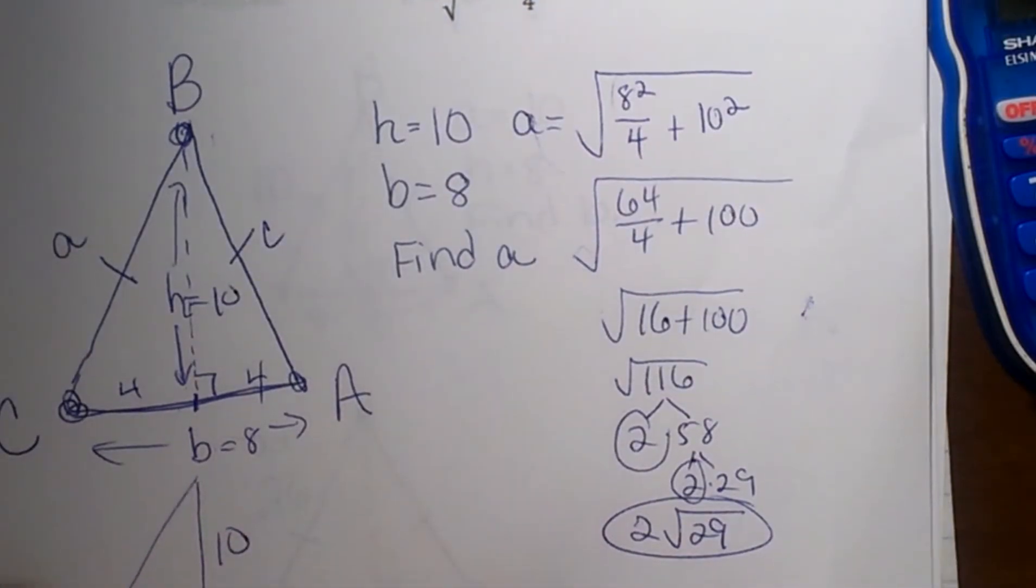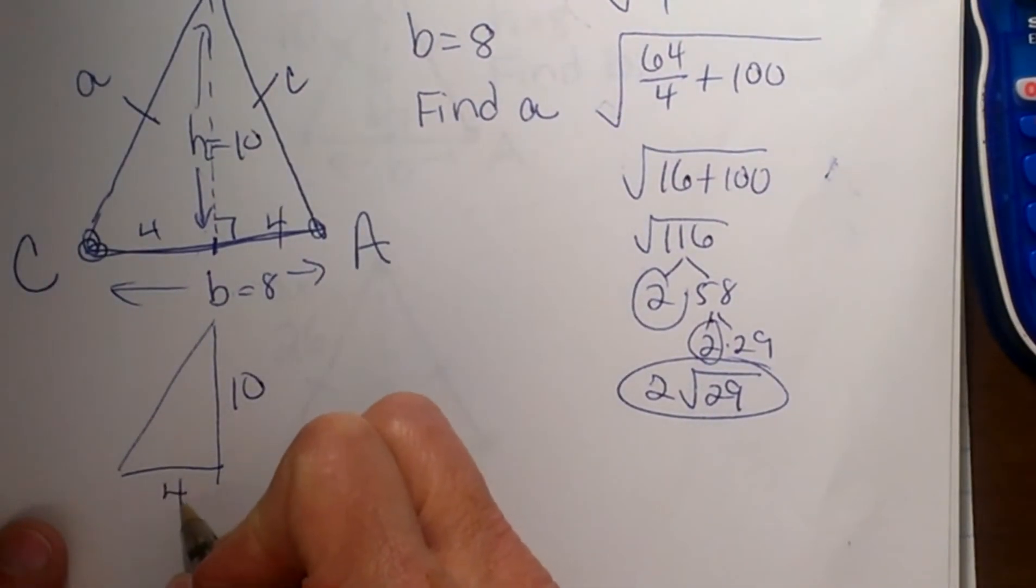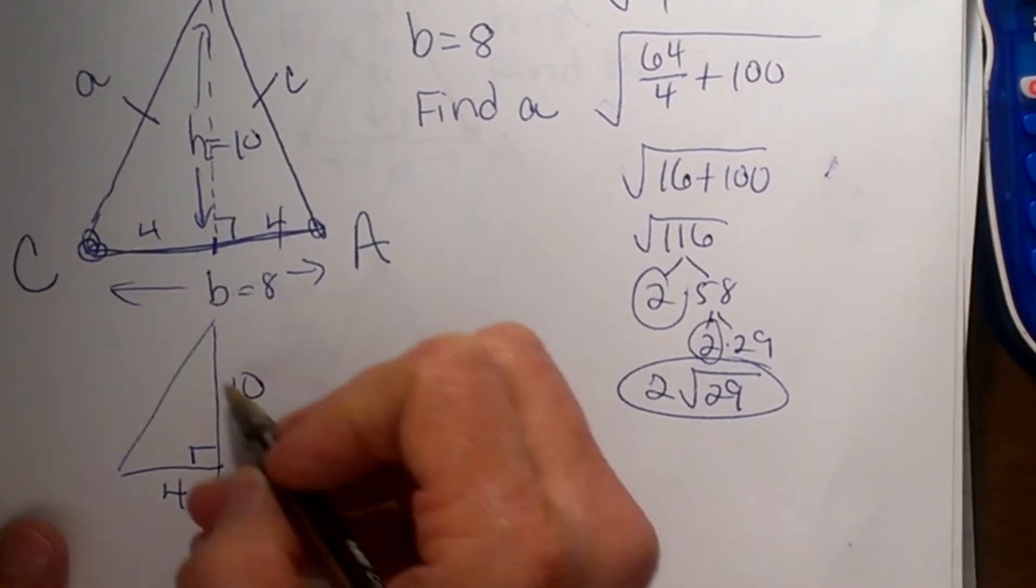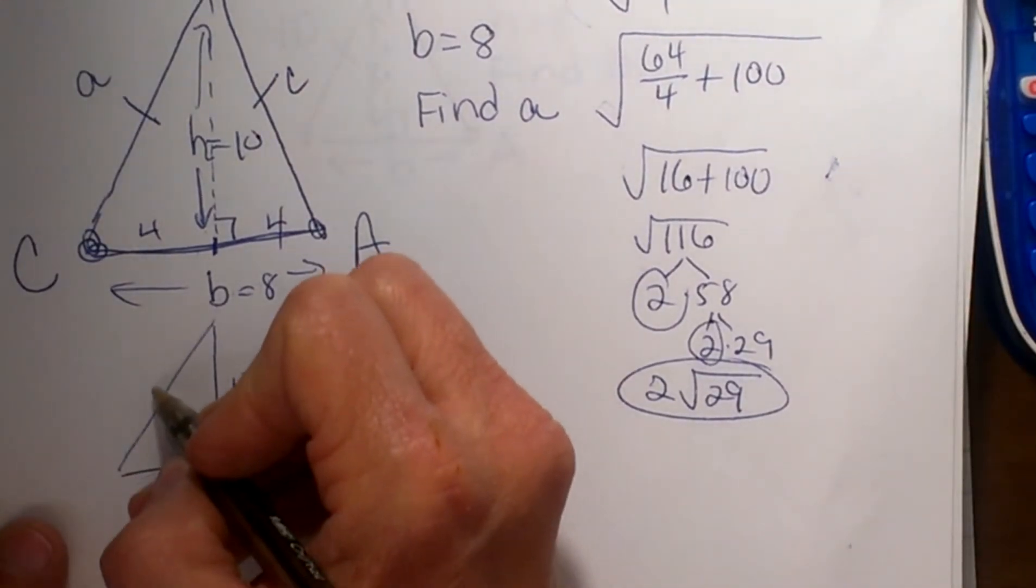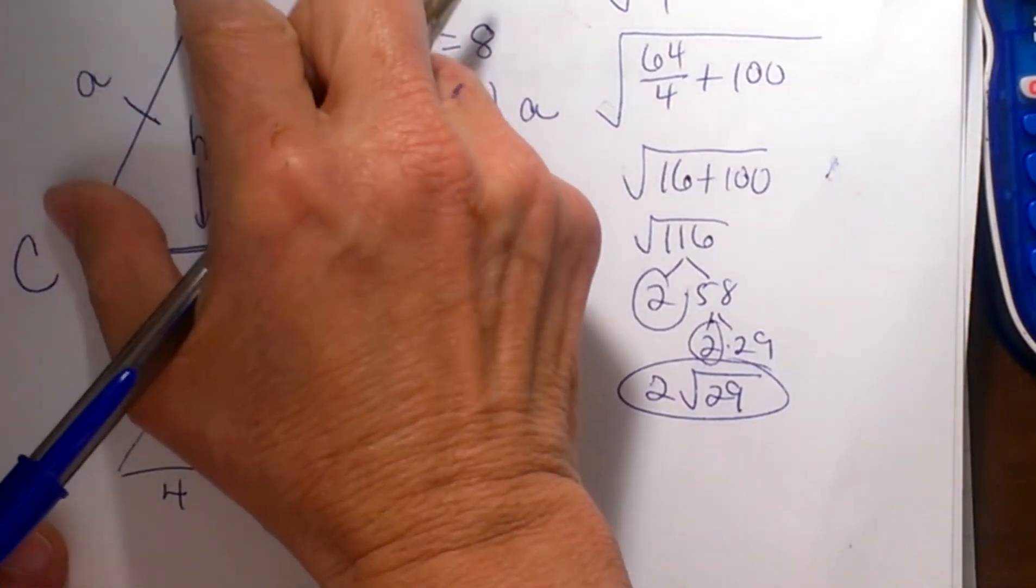So my height would be 10, my base would be 4, and I have a right angle here. Then I can just use the Pythagorean Theorem to find this side a.